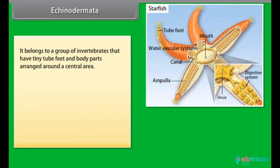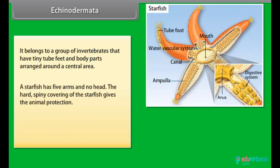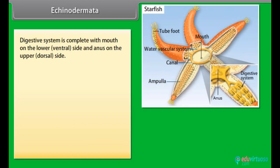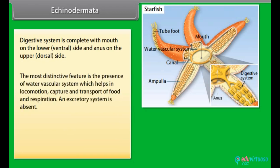Echinodermata belongs to a group of invertebrates that have tiny tube feet and body parts arranged around a central area. A starfish has five arms and no head; the hard spiny covering gives the animal protection. A sea urchin belongs to the same group and its body is covered with spines. The digestive system is complete with mouth on the lower ventral side and anus on the upper dorsal side. The most distinctive feature is the presence of water vascular system, which helps in locomotion, capture and transport of food, and respiration. An excretory system is absent.